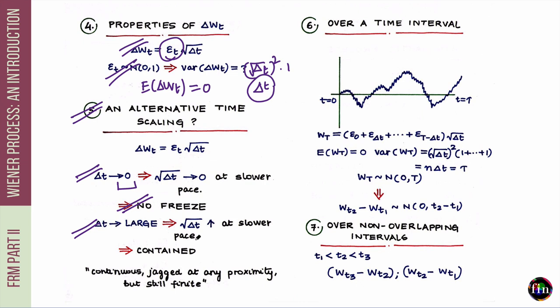Based on these properties, the Wiener process path is continuous — it can be drawn without lifting your pen — yet its parts are very jagged. This jaggedness appears at any level of zoom: even if you zoom into a path of a Wiener process, you never arrive at straight lines; you always see jagged lines. And because of this, the process stays finite and doesn't blow up to infinity for a finite time horizon capital T.